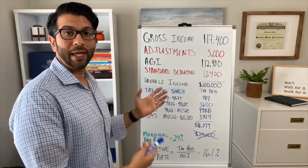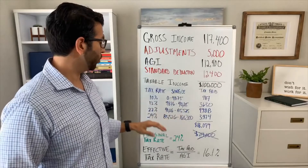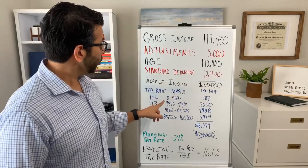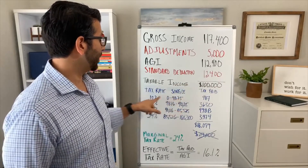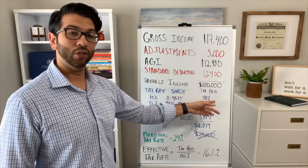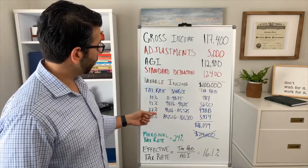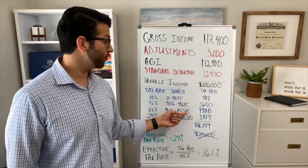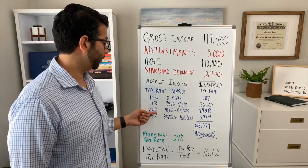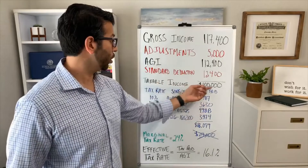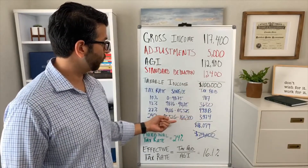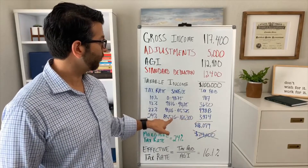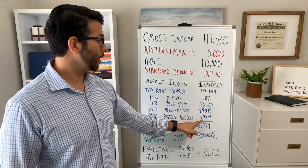The tax brackets now come into play. This individual is a single filer, so of their $100,000 in taxable income, the first $9,875 is taxed at 10%, coming to $987. It goes on from there — for example, income from $40,126 through $85,525 was taxed at a 22% rate. Because this person maxed out at $100,000, their last dollars fall within the 24% bracket — from $85,526 to $100,000 — on which they paid $3,474 in taxes.